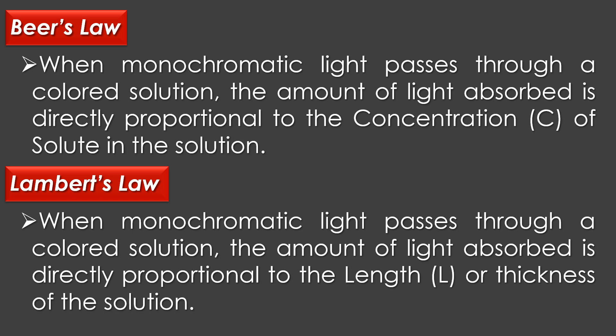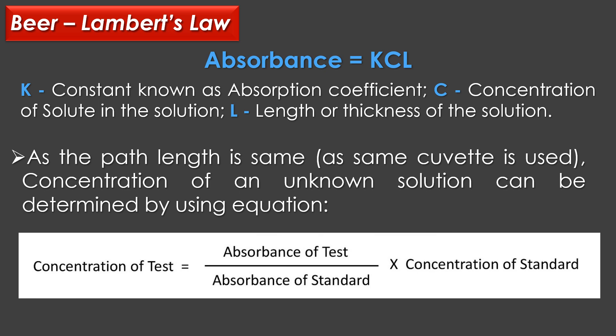Beer's law states that when monochromatic light passes through a colored solution, the amount of light absorbed is directly proportional to the concentration of the solute in the solution. Lambert's law states that when monochromatic light passes through a colored solution, the amount of light absorbed is directly proportional to the length or thickness of the solution.